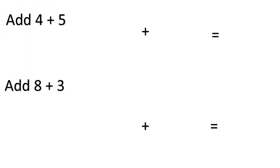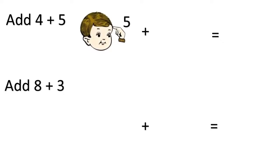Here we have to add numbers four and five. We will keep the bigger number in our mind. Which is the bigger number here, four or five? Yes, five. Let's keep number five in our mind and add number four to it. Open four fingers. We have to always count forwards when we do addition.